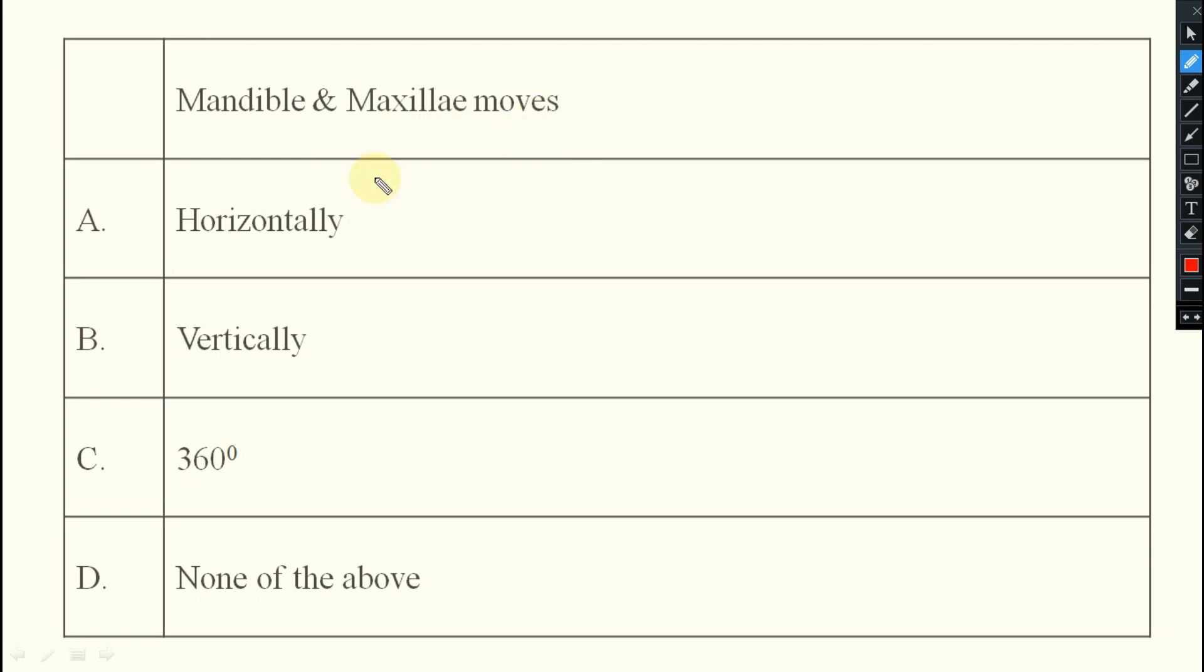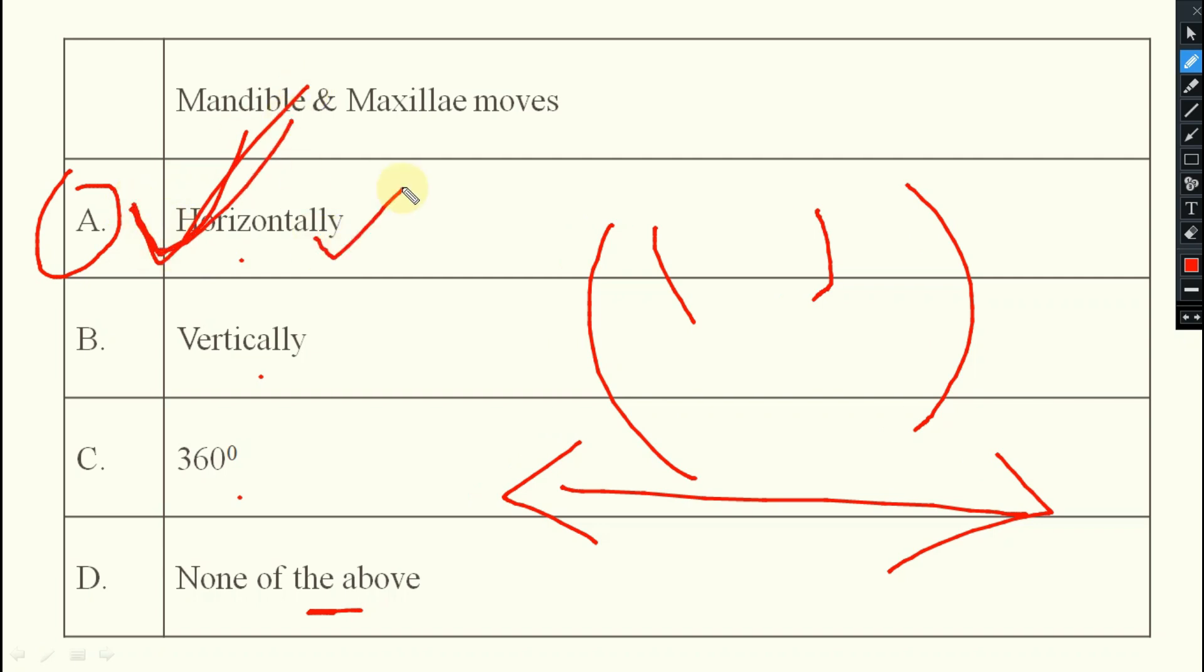Next. Mandible and maxilla move horizontally, vertically, 360 degrees, or none of the above. You see, mandible and maxilla, like this it is there. Mandible and maxilla, how they will move? They will move in the horizontal plane. So the option will be option A, horizontally.